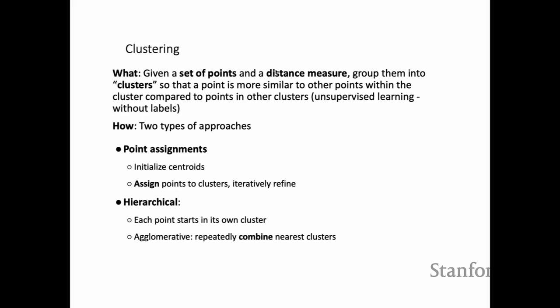Clustering is an unsupervised learning method where, given a set of points and a measure of distance, you want to assign points that are close to each other into the same clusters. There are two general types of approaches. The first is point assignment: you initialize centroids, assign points based on distance to the centroid, then iterate and refine the assignment. The second is hierarchical clustering, where each point starts as its own cluster and you combine clusters based on distance.